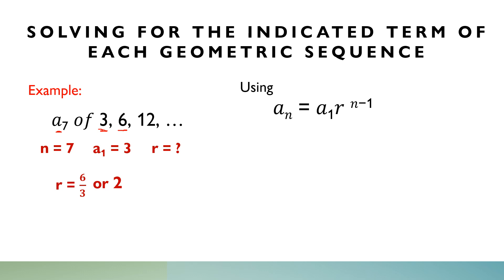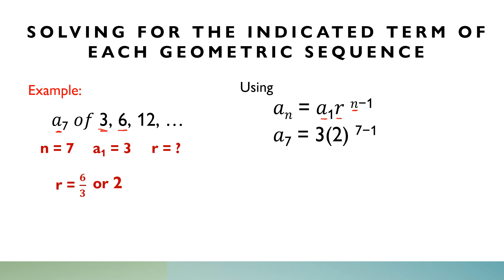Take note, we are going to solve for a sub 7. Using the given information, n is equal to 7, a sub 1 is equal to 3, and r is equal to 2. We are going to substitute the values of a sub 1, r, and n. Substituting, a sub 7 equals 3 times 2 to the power of 7 minus 1. So, 7 minus 1 is equal to 6.